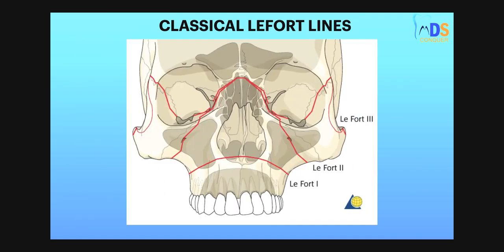The classical LeFort lines: LeFort 1 line is the low maxillary line; LeFort 2 line is a pyramidal-shape line; and LeFort 3 line is craniofacial disjunction extending from FZ to FZ — where FZ is the frontozygomatic suture.